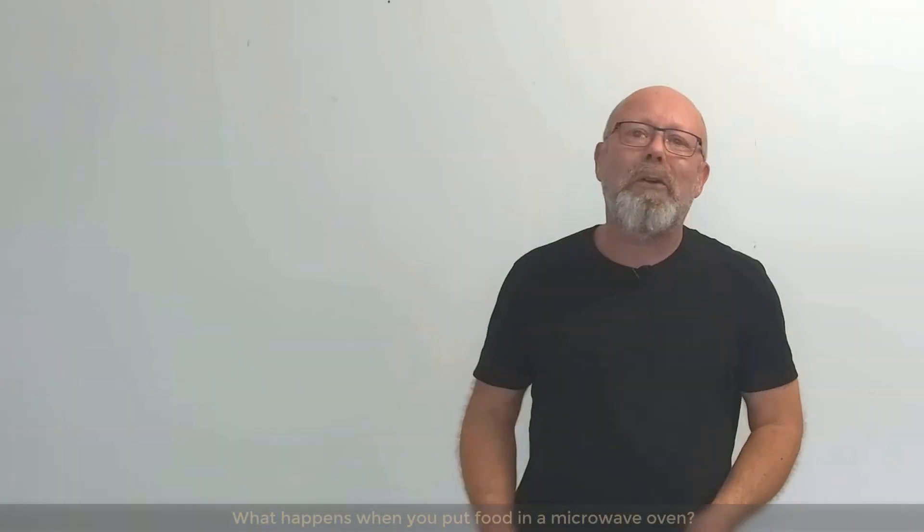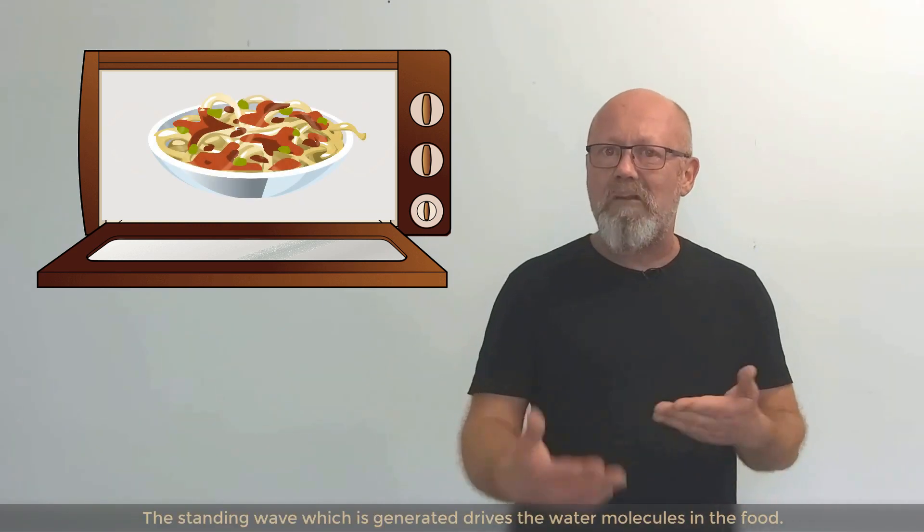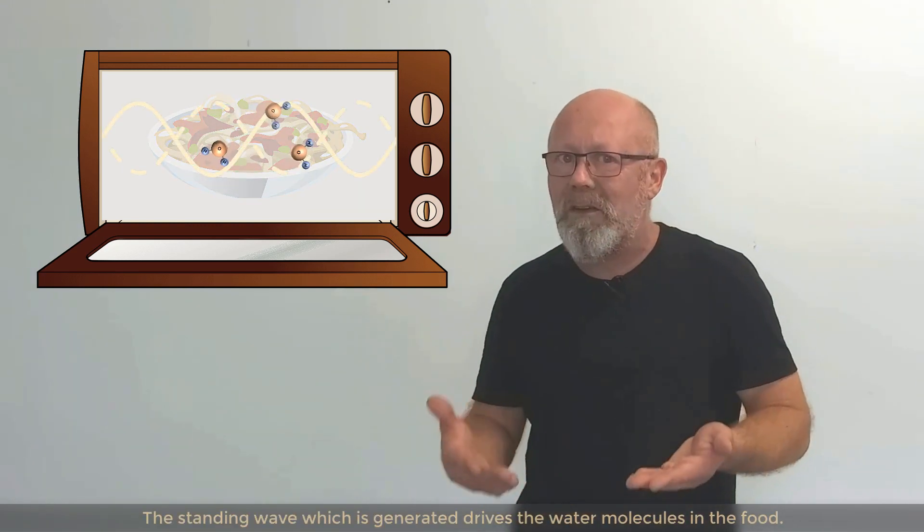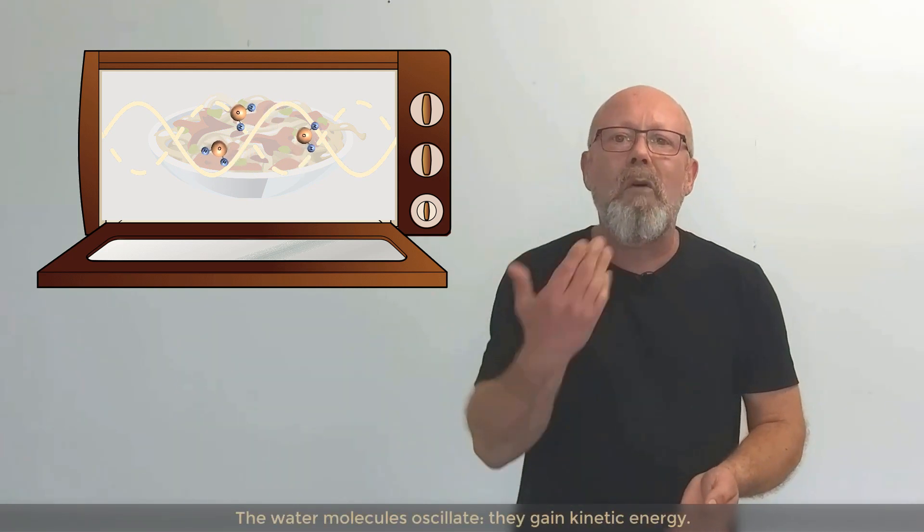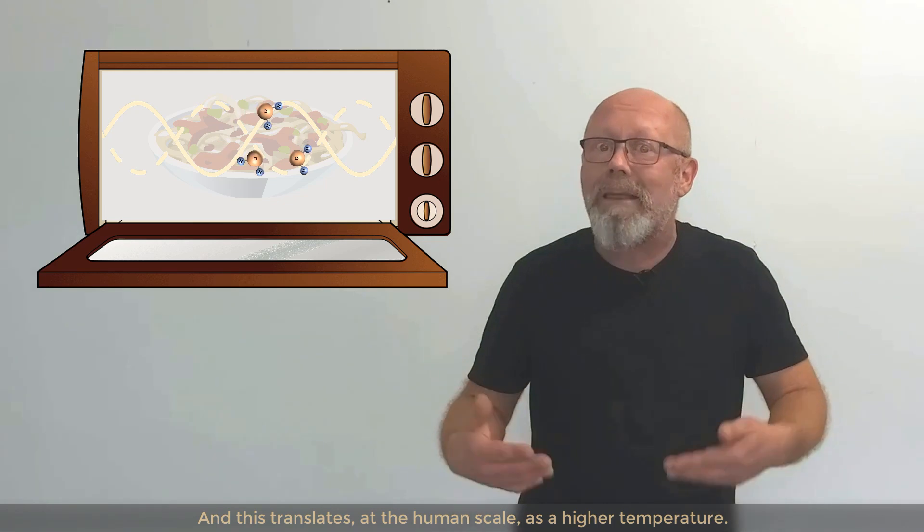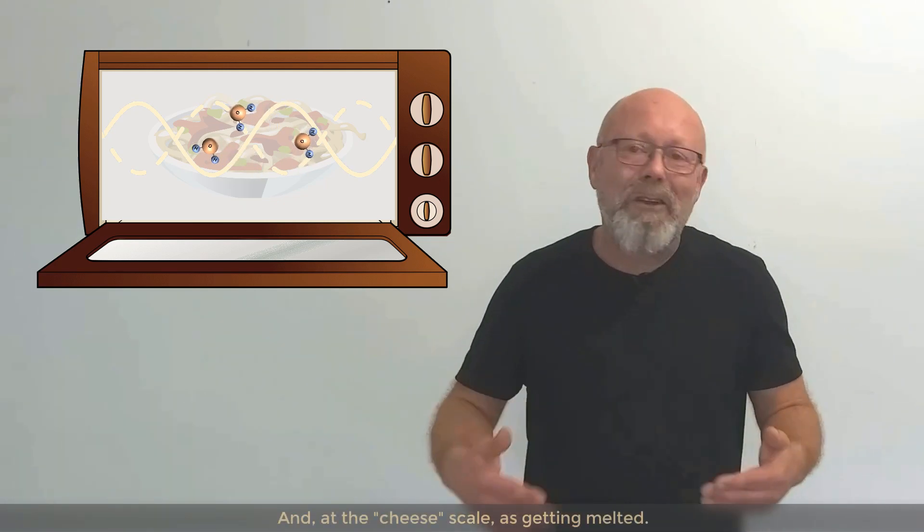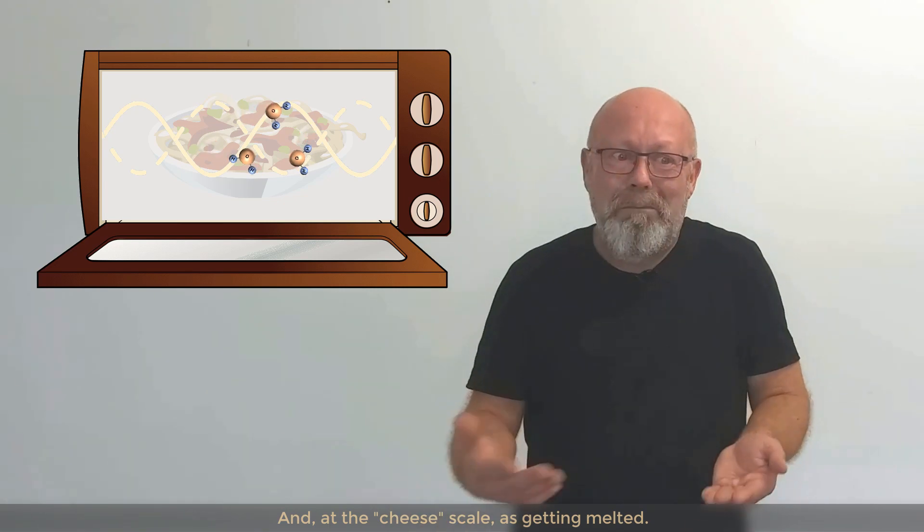What interests us here is that the distance between two antinodes is equal to half of the wavelength. Now, what happens when you put food in a microwave oven? The standing wave which is generated drives the water molecules in the food. The water molecules oscillate. They gain kinetic energy. And this translates at the human scale as a higher temperature. And at the cheese scale as getting melted.